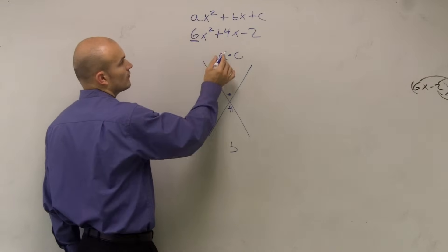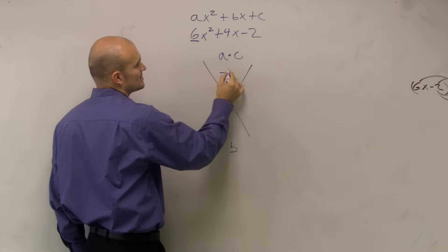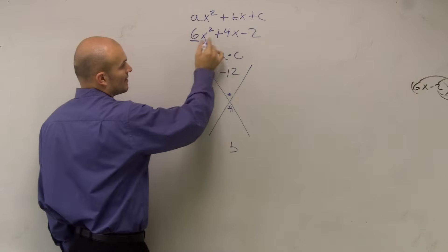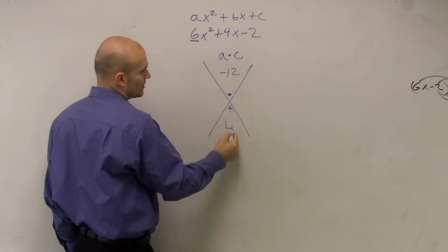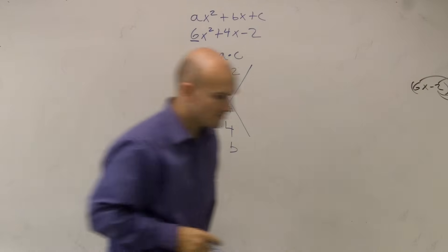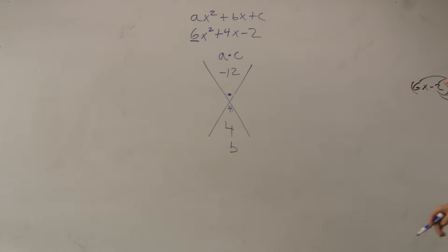Since a is greater than 1, I multiply my two numbers on top, negative 12, and then take my b, which is 4. And now I'm going to determine what two numbers multiply and give me negative 12, but add to give me a positive 4.